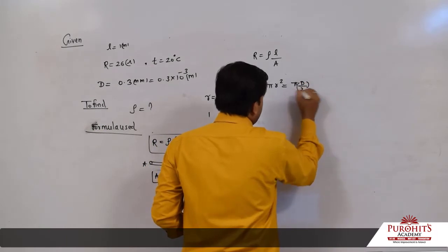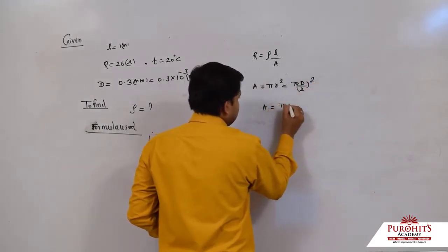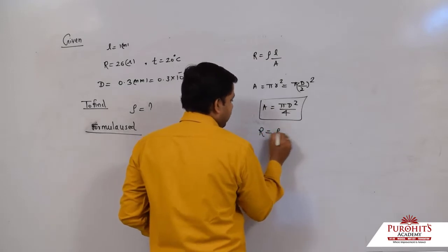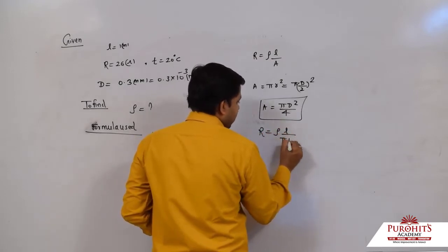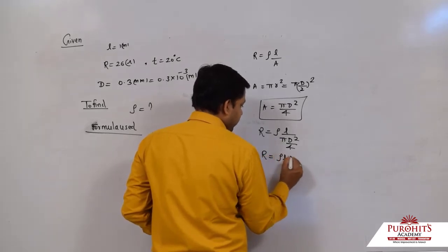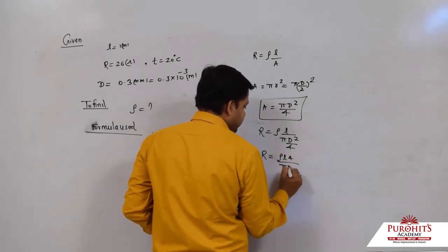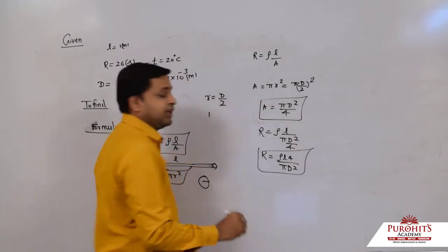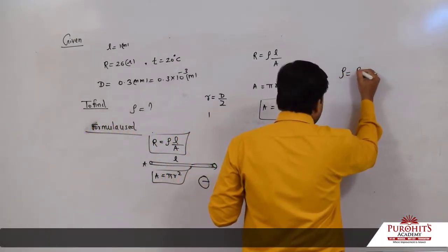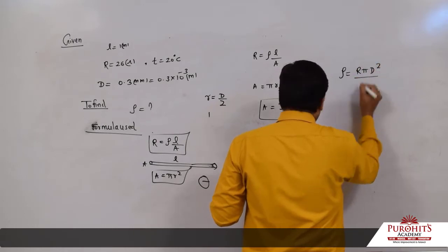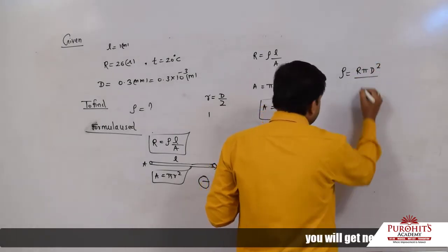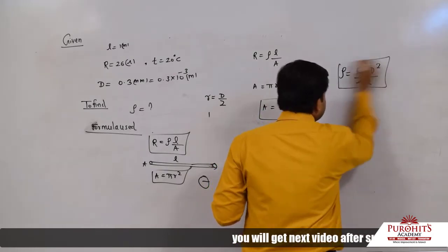So A = π(d/2)² = πd²/4. Therefore R = ρl / (πd²/4) = 4ρl / (πd²). We have to find resistivity, so rearranging: ρ = R·πd² / (4l). This is the resistivity formula.